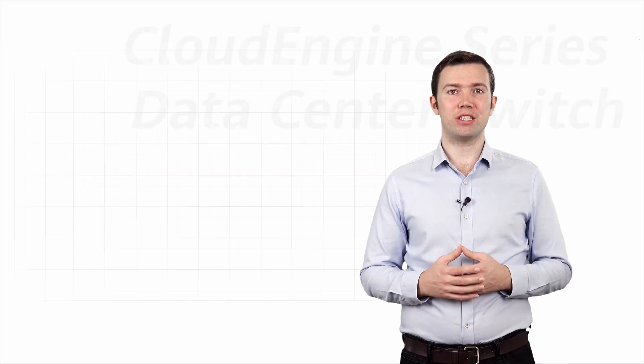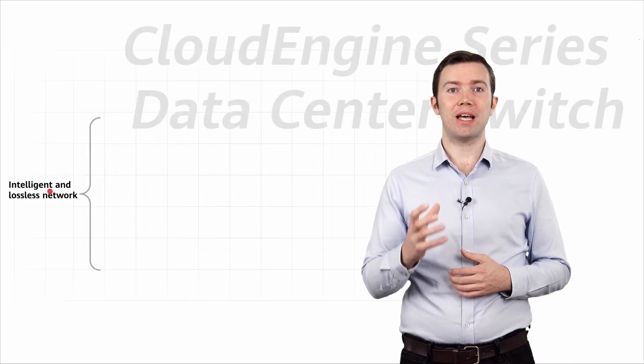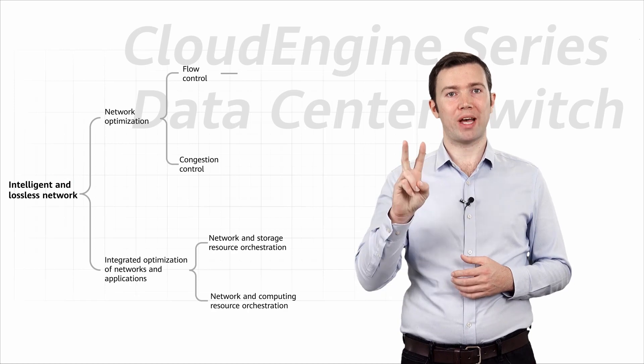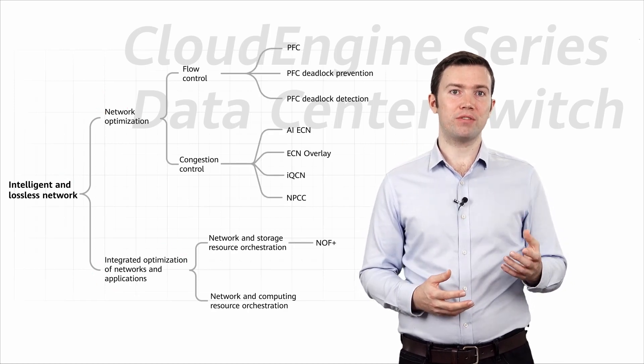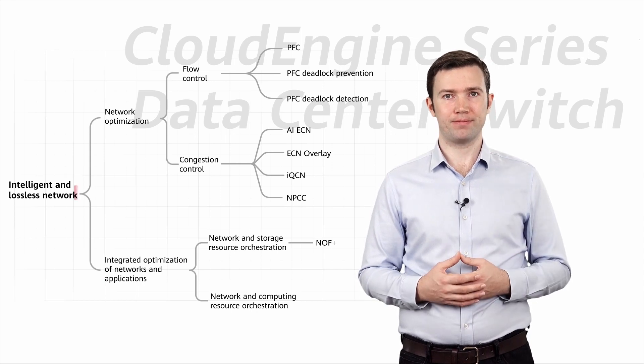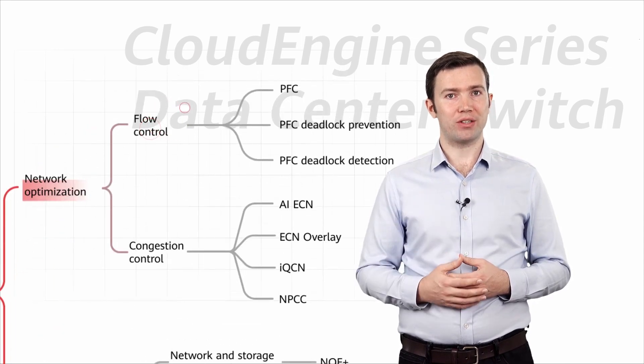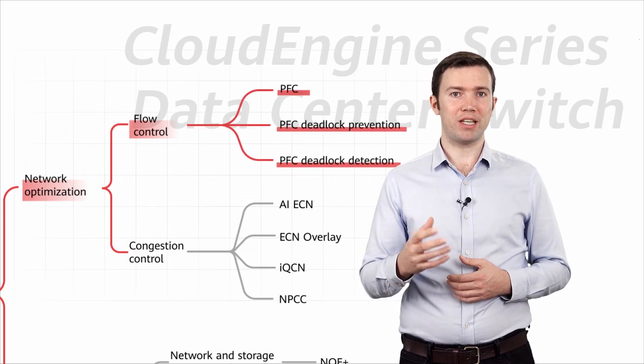Huawei Cloud Engine Series Datacenter switches build intelligent and lossless networks from two aspects, network optimization and integrated optimization of networks and applications. Today, I'm going to talk about flow control technology used in network optimization.